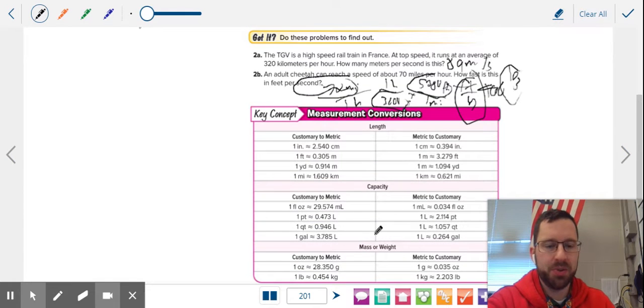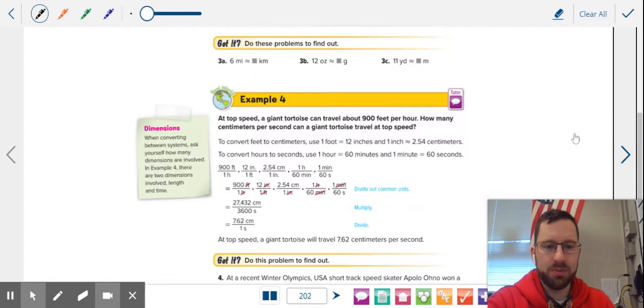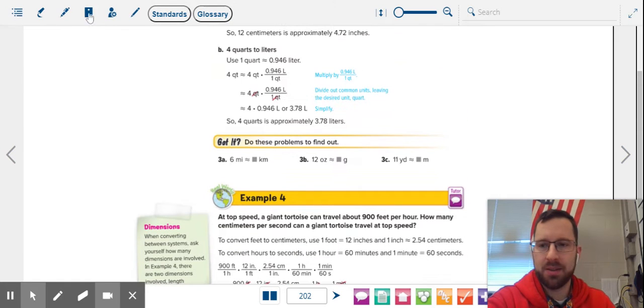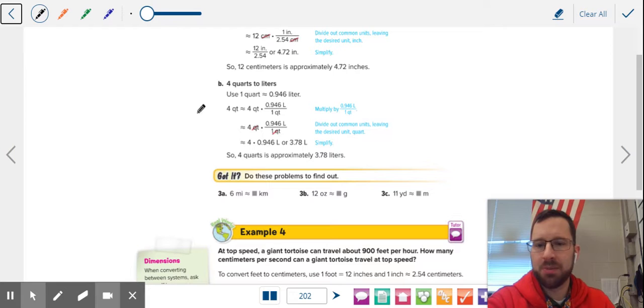I'm going to flash back to this page to pull these numbers because I don't have these memorized by heart. Who would memorize these numbers? And these are all, see these squigglies? That means they are estimates. They're rounded, they're not exactly equal, because there's not an exact conversion between metric and English, unfortunately, but that's the way it is.